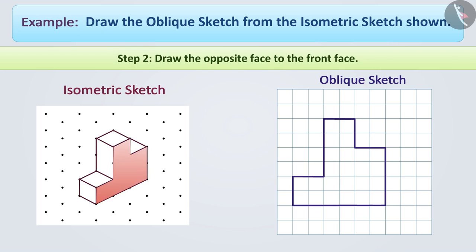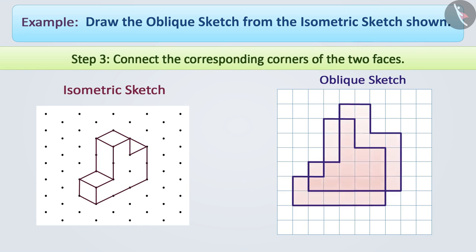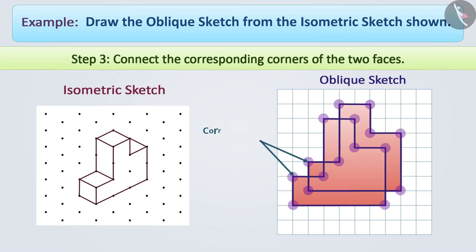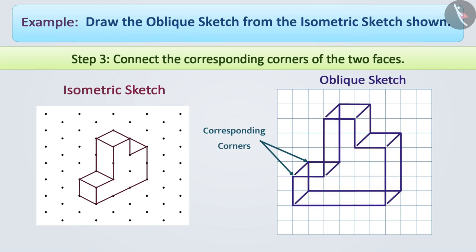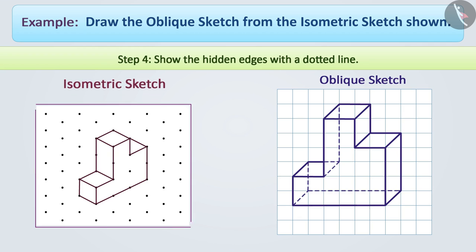Step 2: Now, we will draw the opposite face to the front face. We will draw this face in such a way that its size is equal to the front face but it is slightly shifted as compared to the front face. Step 3: After this, we will connect the corresponding corners of the two faces. Step 4: Now, we will show the hidden edges with a dotted line. Here, we have drawn the oblique sketch from the isometric sketch shown.